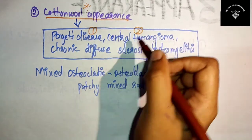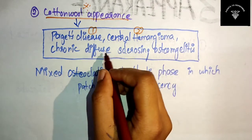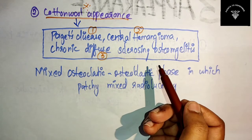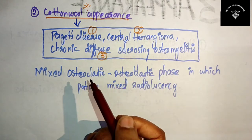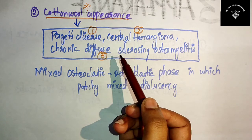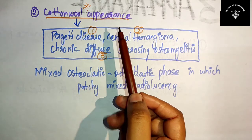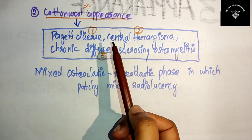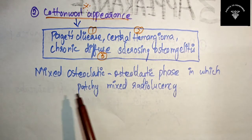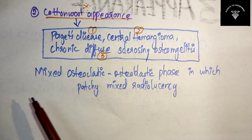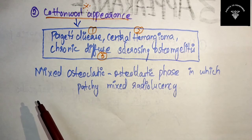The cotton wool appearance is very important. It is seen in Paget's disease first, second in central hemangioma, and third in chronic diffuse sclerosing osteomyelitis. You can write any one of these in your exam, and if you remember all three it will fetch you more marks.